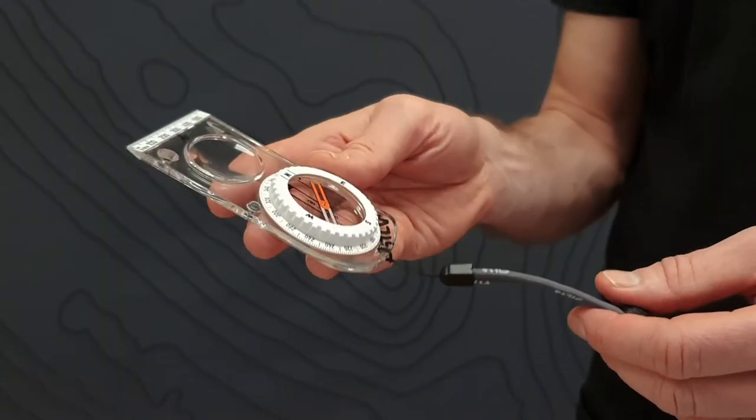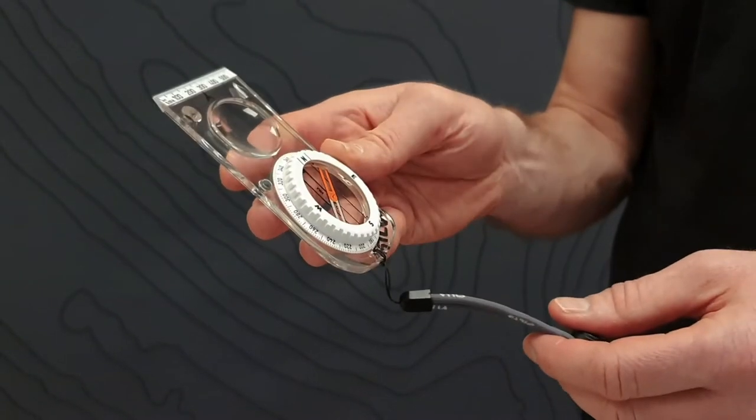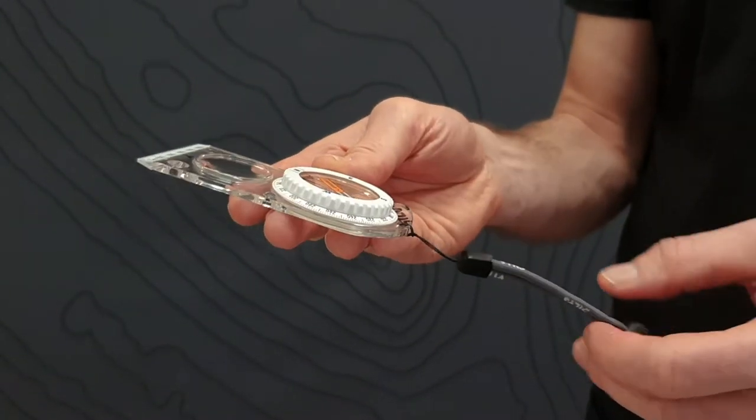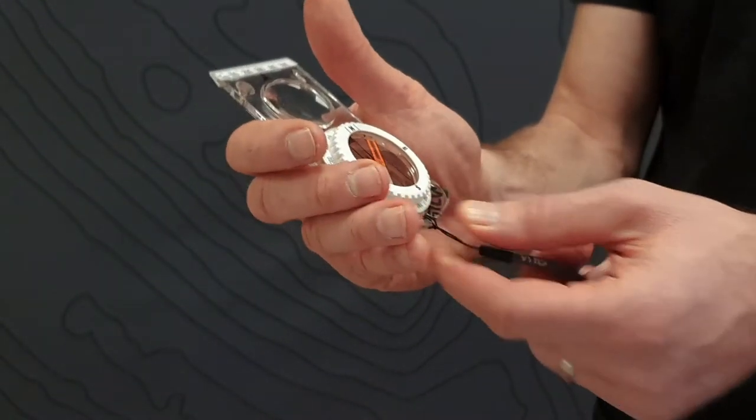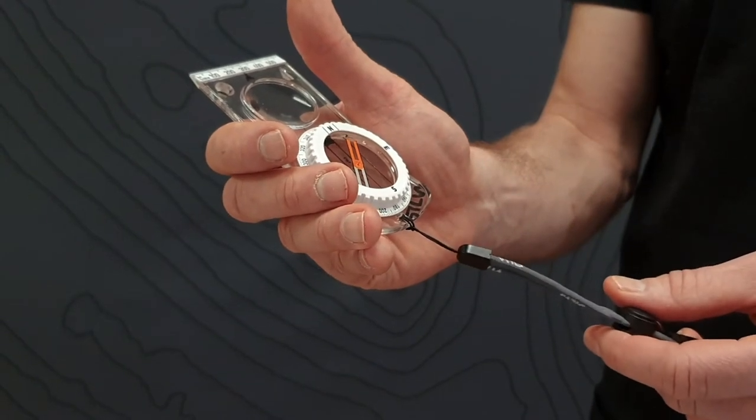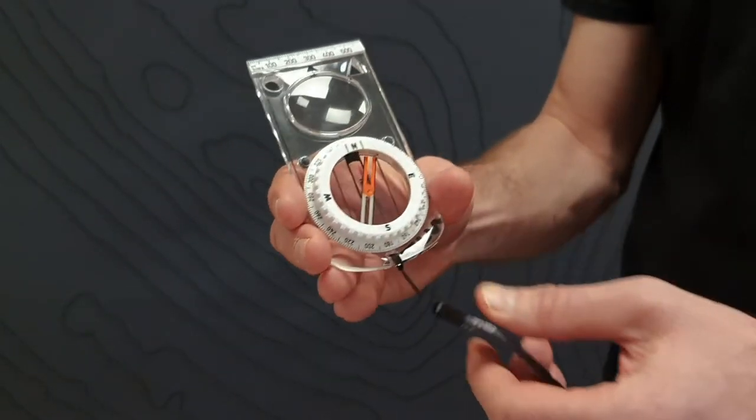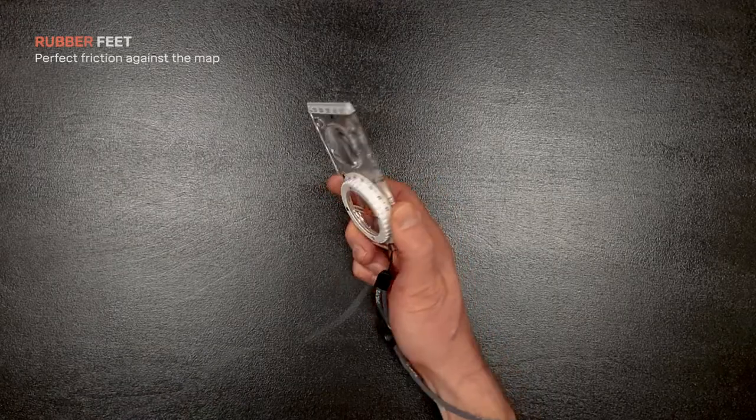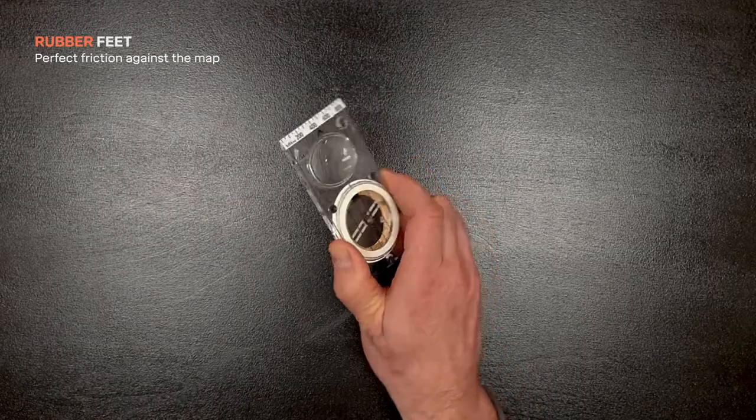The base plate is curved up at the back end to give a better feeling in the hand. The plate is made of highly durable material to withstand tough conditions and provide lots of transparency for a clear view of the map. The bottom of the base plate has rubber feet for perfect friction against the map.